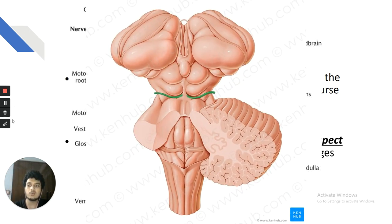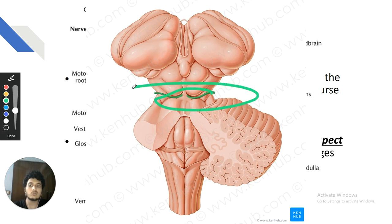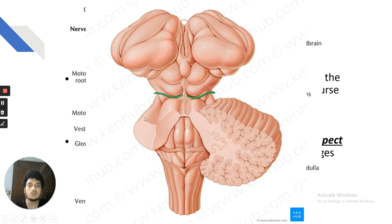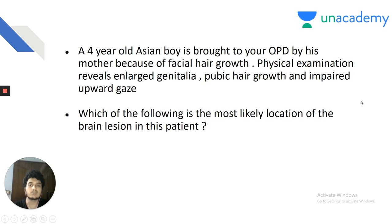From the dorsal aspect of the midbrain, only one cranial nerve arises — the trochlear nerve. This has been an important examination question.